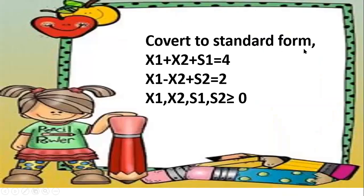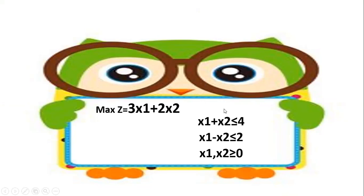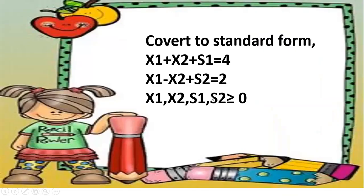To convert to standard form, we add slack variables. So x1 plus x2 plus s1 equals 4, and x1 minus x2 plus s2 equals 2. Here s1 and s2 are called slack variables. Since the left-hand side is lesser than the right-hand side, we add slack variables to make it equal.